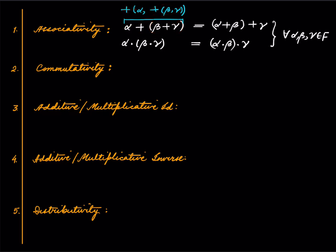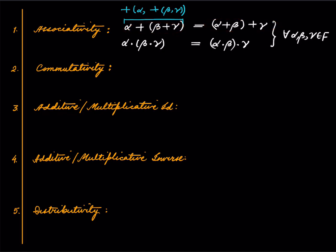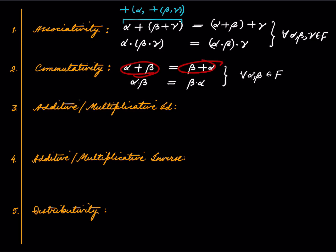Note that associativity holds for real numbers, so this is familiar territory. The second property is commutativity, which says α + β = β + α and α · β = β · α for all α, β in F. This is also familiar from real numbers — this is how addition and multiplication in real numbers behave.